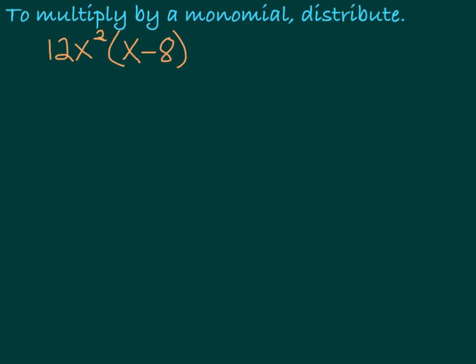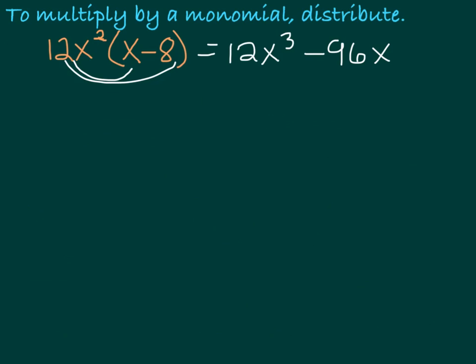Let's move on to multiplying. If I'm going to multiply a polynomial by a monomial, all I have to do is distribute. For example, 12x squared times x would be 12x cubed, and 12x squared times negative 8 is going to be minus 96x squared. Easy peasy.